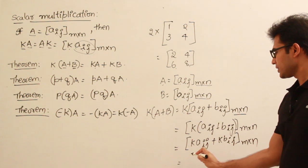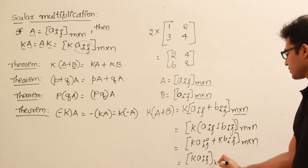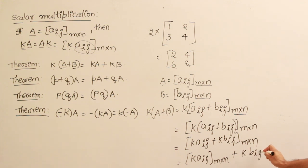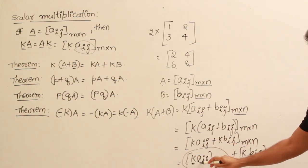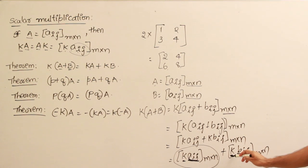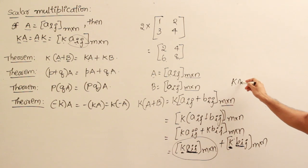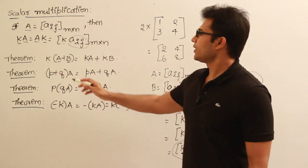Now we can again write it like this: k(a_ij) m by n plus k(b_ij) m by n. So what is this? It is nothing but every element of capital A, the matrix capital A, being multiplied with k. Here also it is every element of capital B being multiplied with k. Therefore it is kA plus kB. So finally we get kA plus kB. So that is one way to prove it.